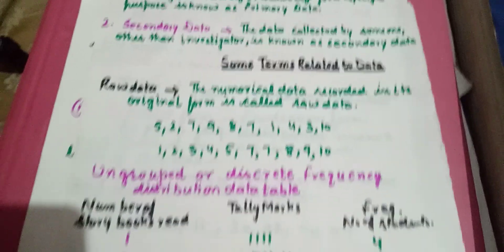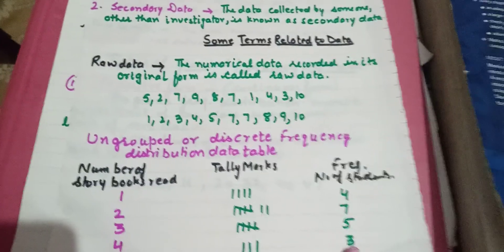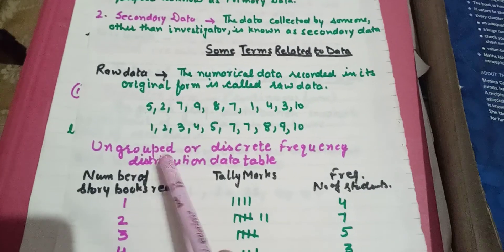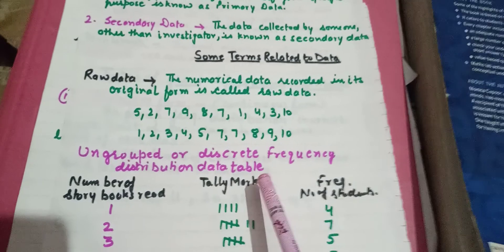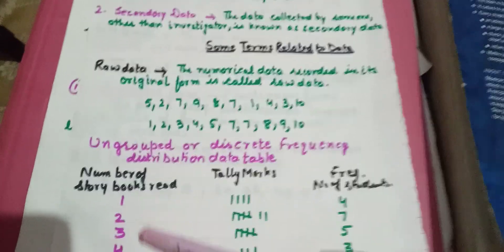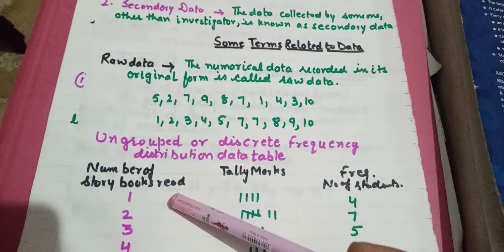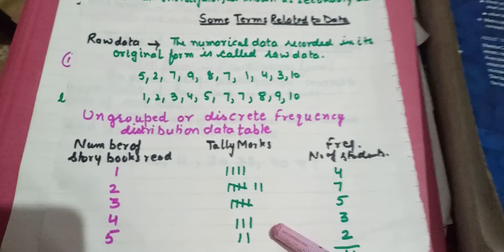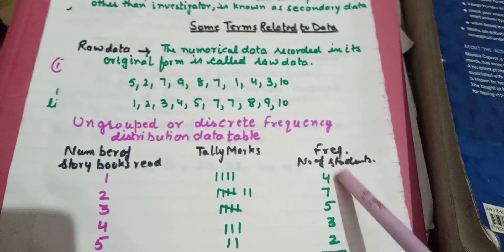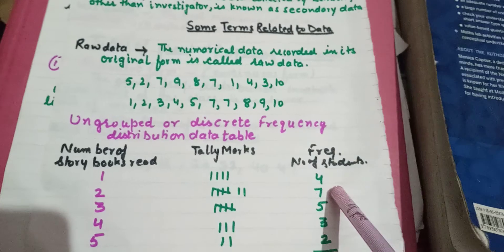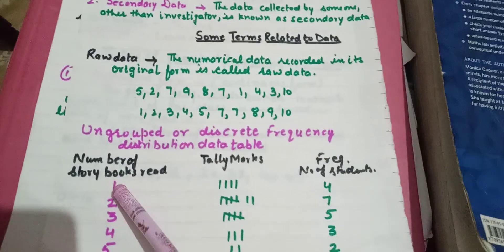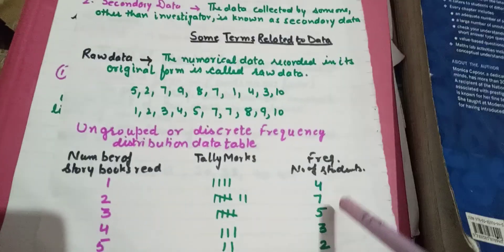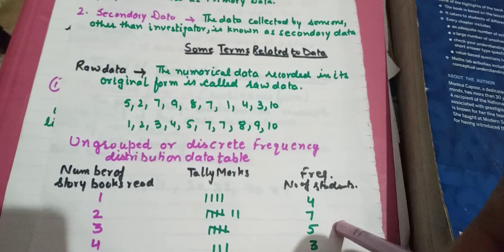In your previous classes you have also done frequency distribution tables — this type is called an ungrouped or discrete frequency distribution table. Here we take one data set where the number of story books read by students of a class is given. Tally marks are prepared and then the frequency is written. For example, this shows that one book is read by four students.